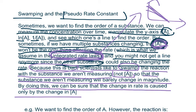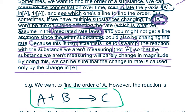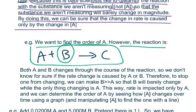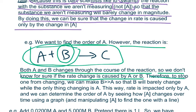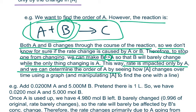Let's do an example. Let's say we wanted to find the order of A in the net reaction A plus B becomes C. The thing is that B might have an order as well, and you will never know. So both A and B change throughout the course of the reaction, so we don't know for sure if the rate change is caused by A or B as the reactants are depleted. Therefore, to stop one from changing, we can make the concentration of B be much greater than the concentration of A, so that B will barely change while the only thing changing is A. This way, we can know for sure that rate is impacted only by A, and we can determine the order of A by seeing how A changes over time using a graph.